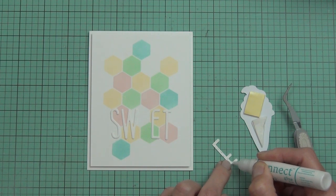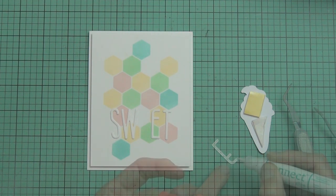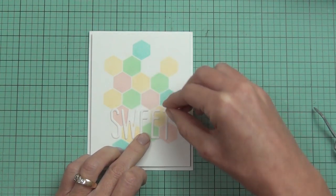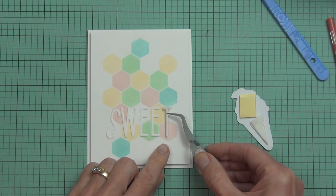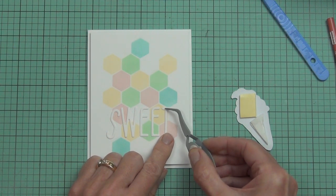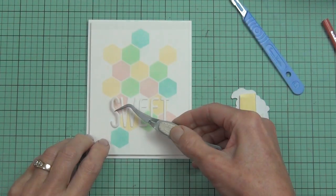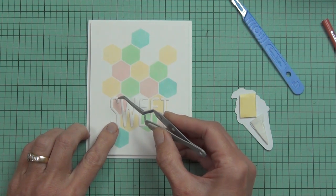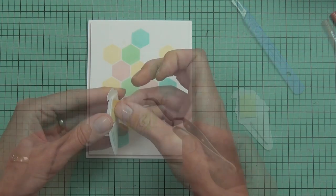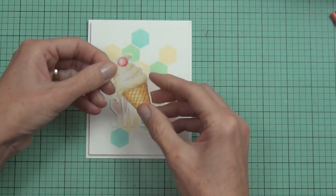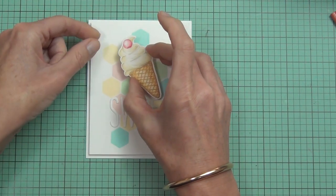I have the word sweet which I've die cut from the tall alpha die set. I'm having a love affair with this die set at the moment. It's the bold alpha set that's the one that I have used so much. Now this one's my new favorite and I like the size of it because you can fit more words on your card.